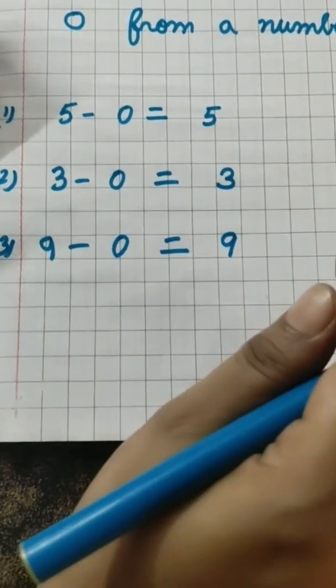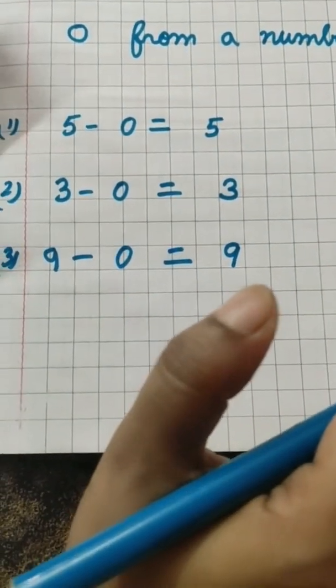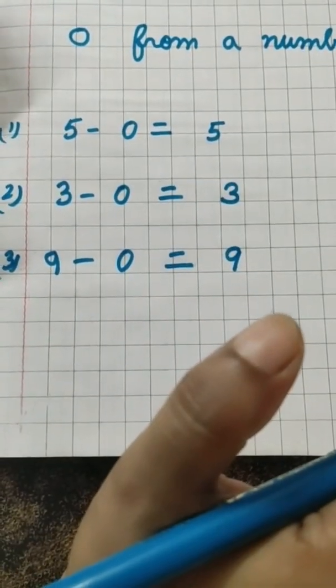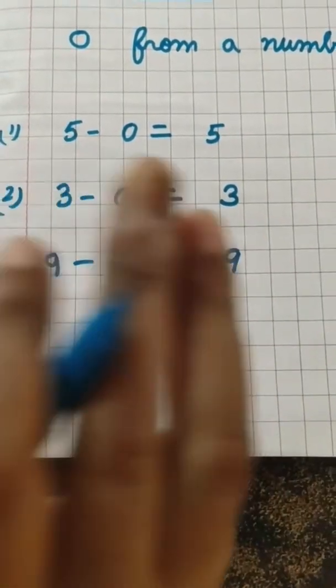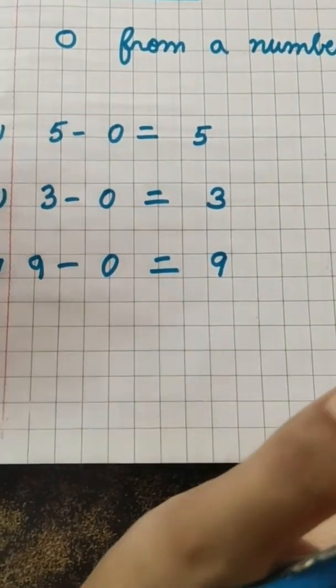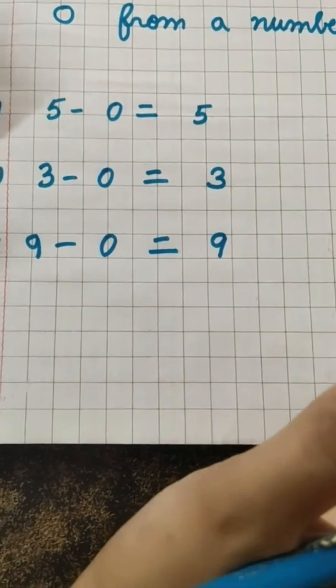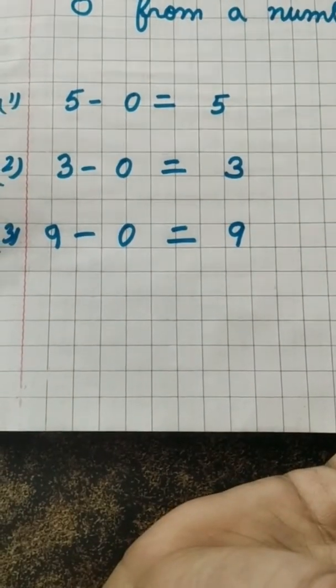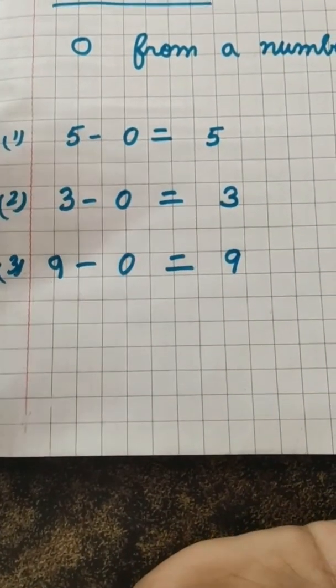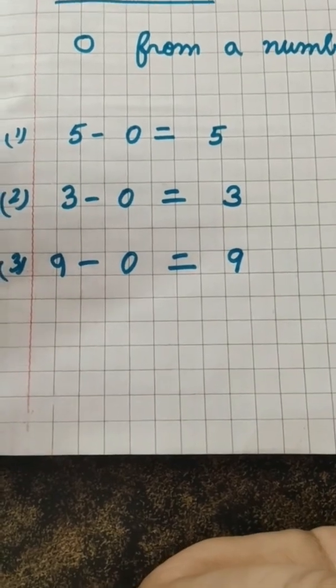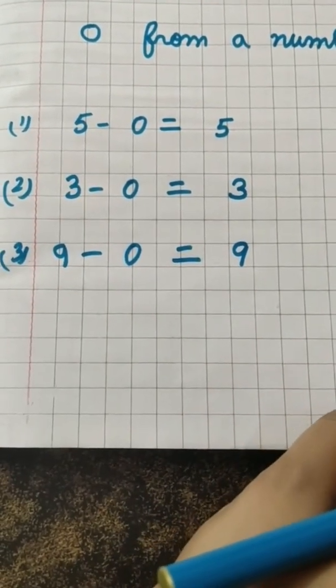Suppose if you are having 8 biscuits and you had not given that biscuit to anyone, if you have not shared that biscuit to anyone, then how many biscuits are with you? Whatever you are having earlier - yes, 8 biscuits only. Got it, children? Very good. Now come to the next fact.